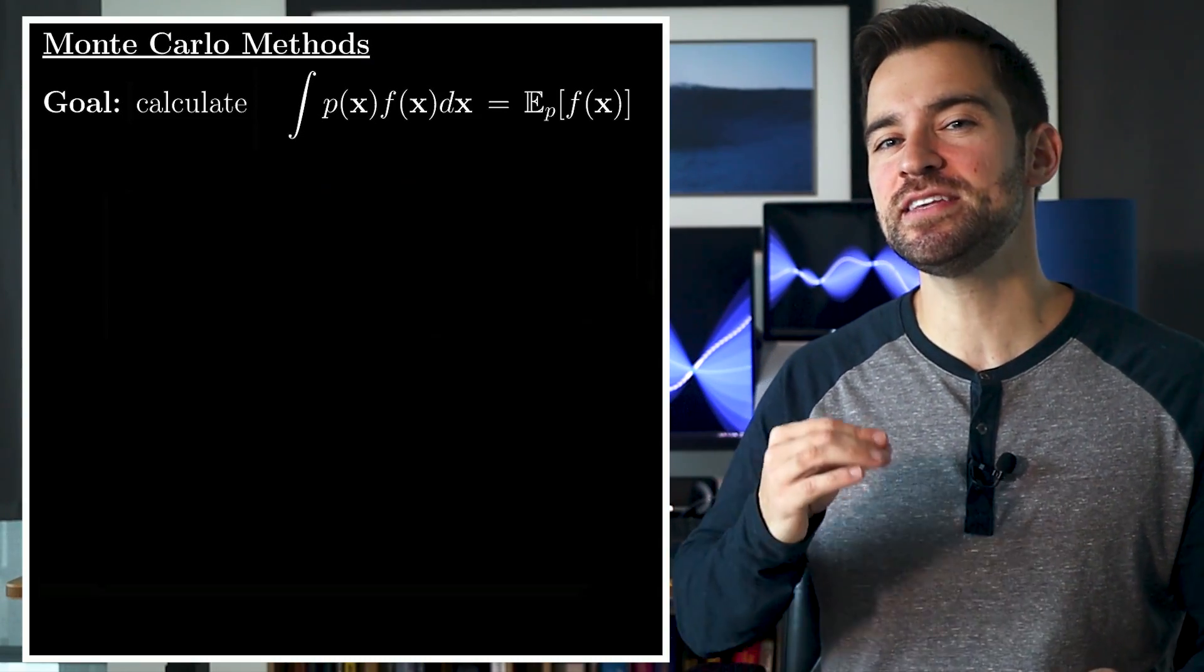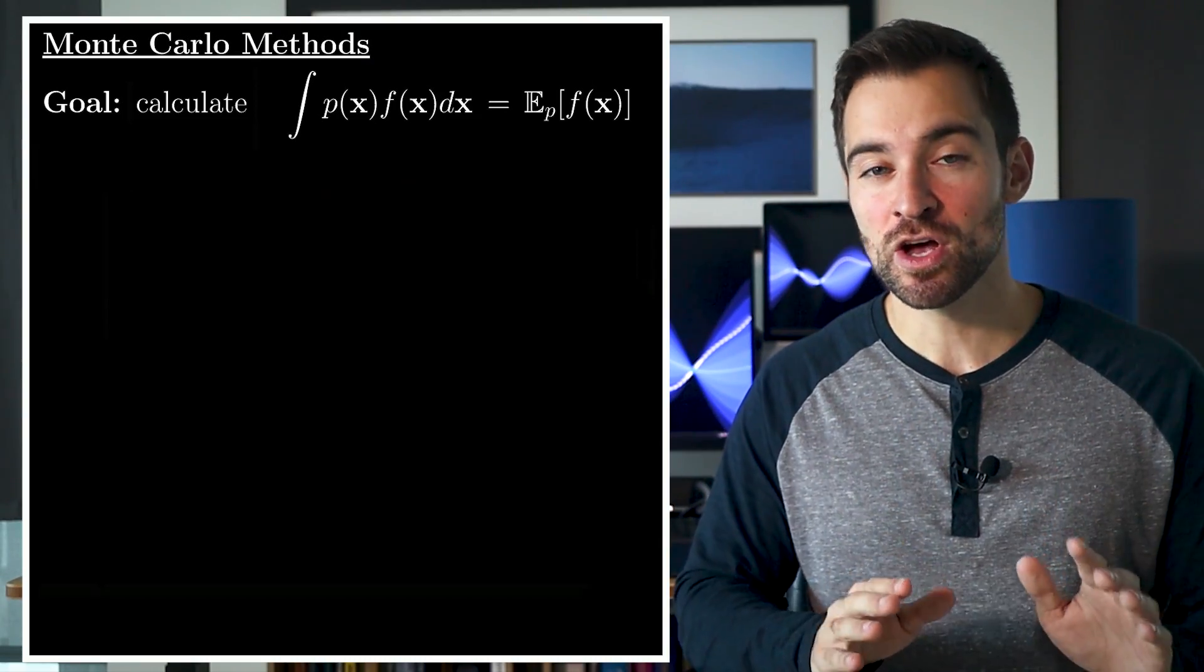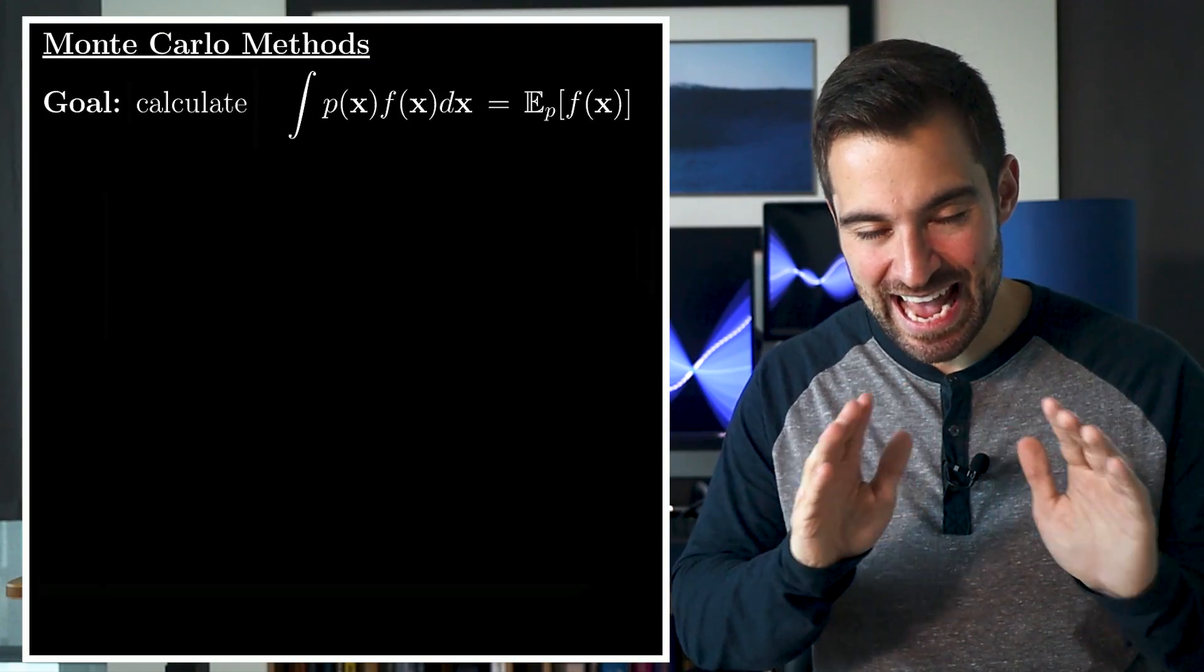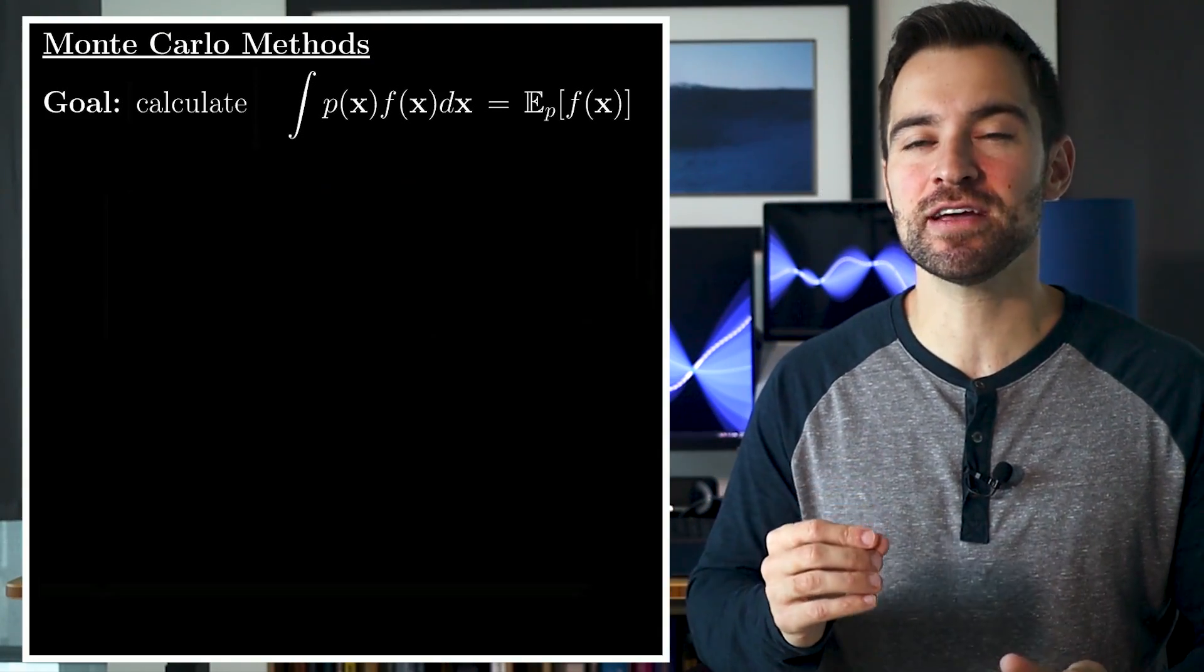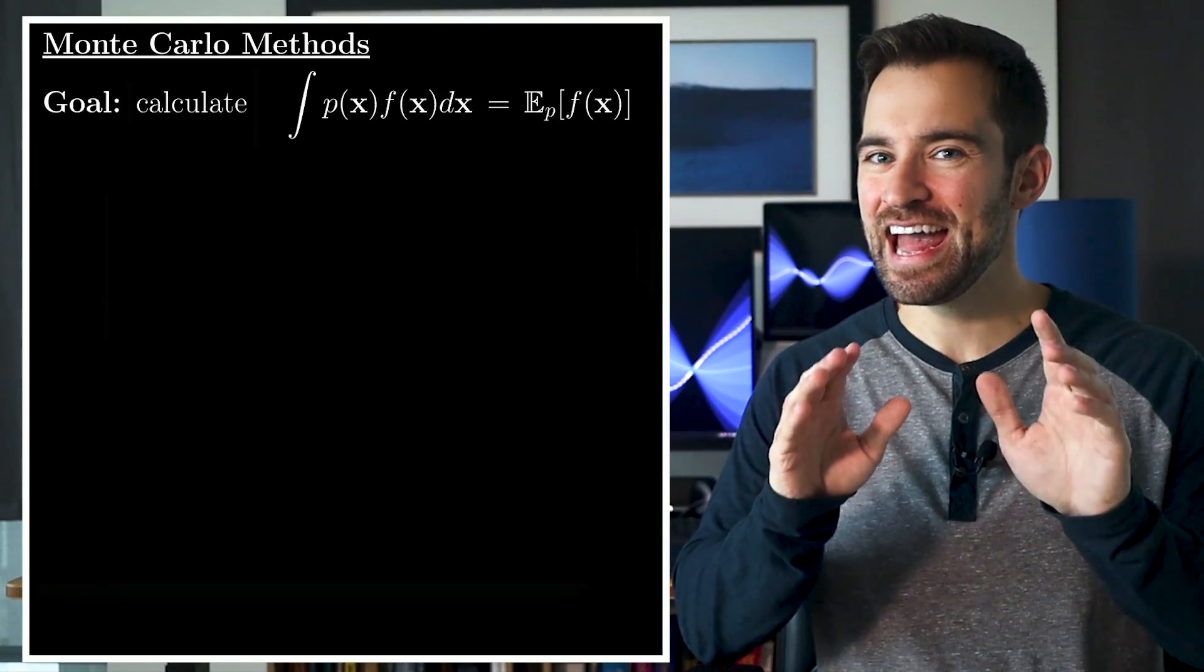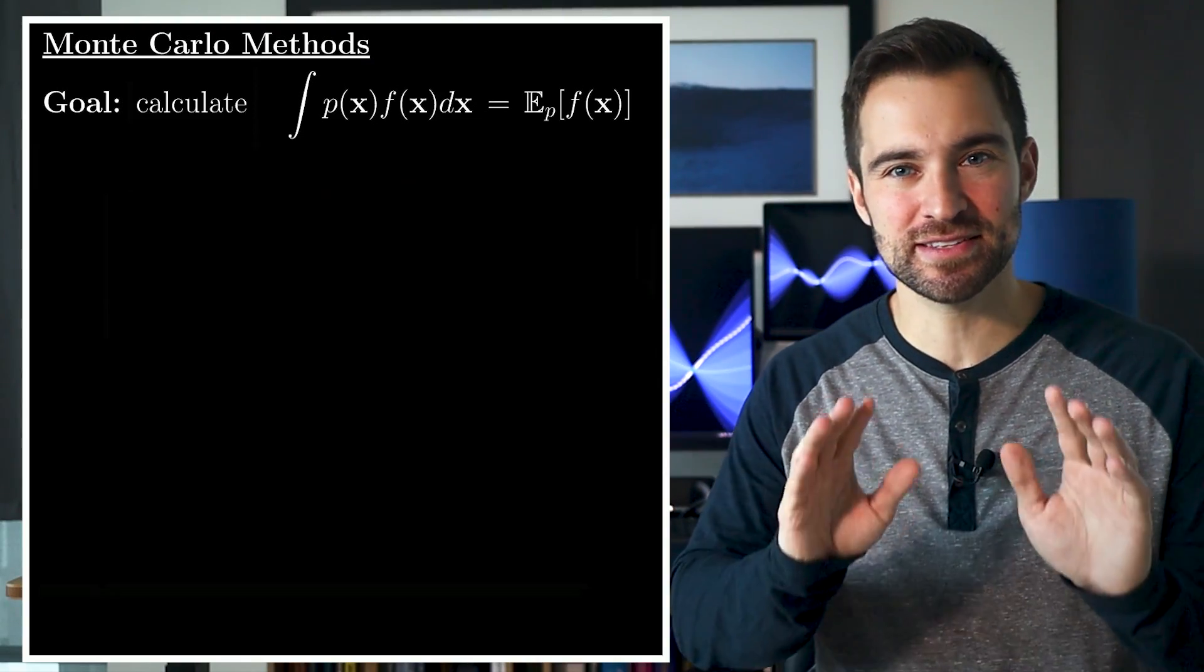Typically, it's because the dimension of x is high, so the space it lives within is exponentially huge. And so, we have no hope of adding everything up within it. And this is where Monte Carlo methods come in.